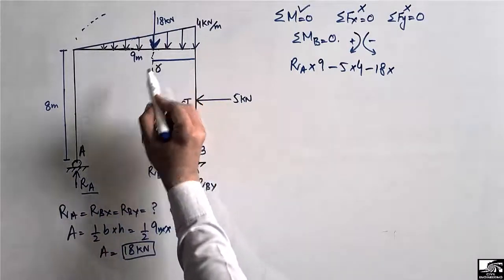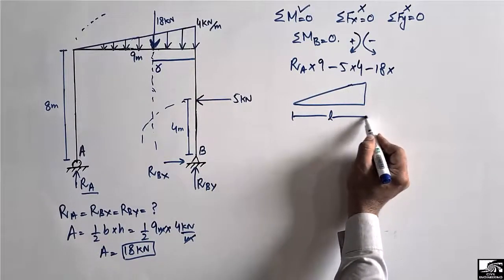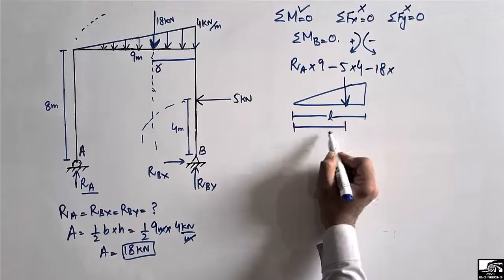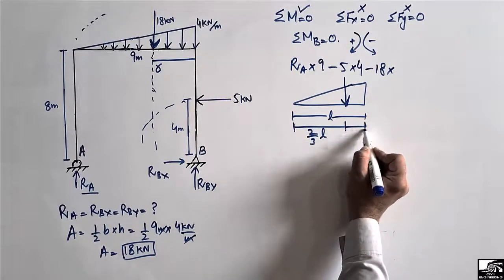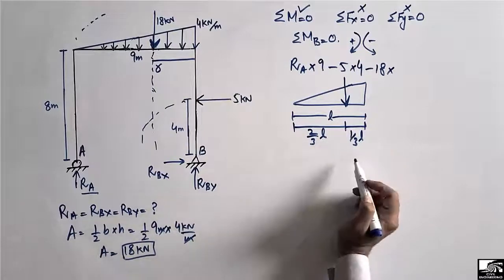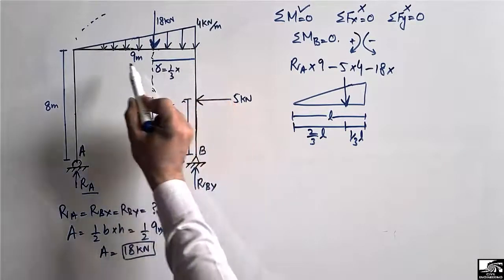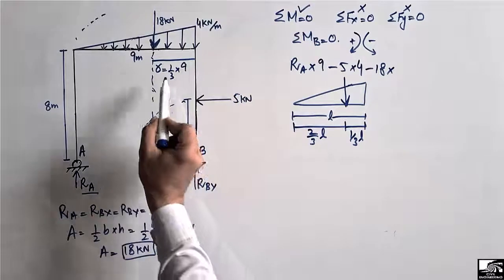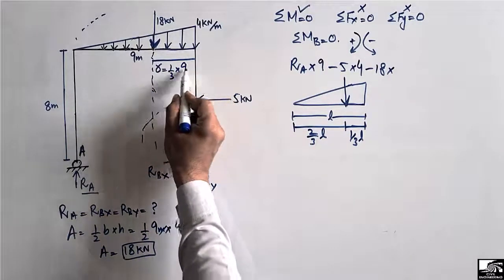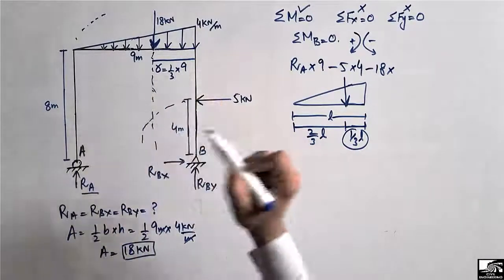The moment arm for the 18 kilonewton load is the distance from its point of application to B. For a triangle of length L, the centroid lies at one-third of L from the zero end and two-thirds from the maximum end. For our triangle, taking from the zero end, the centroid r equals one-third times 9 meters, which equals 3 meters.